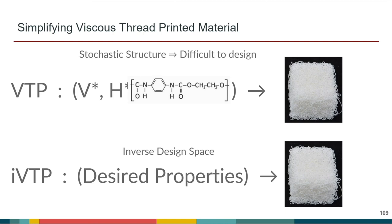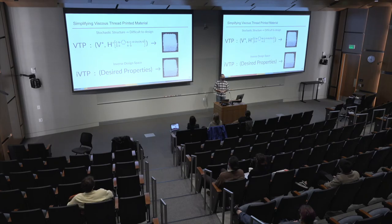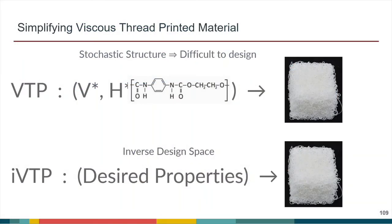Wouldn't it be great if instead we're able to reverse that, and to give the desired properties that we want and then get the structure that is the goal? Half of this work is dedicated to finding this inverse design space. Currently we're investigating the forward design of the actual simulation printing process as well as the physical printing process, and conversely, once we have that, we should be able to kind of give ourselves an inverse design space.